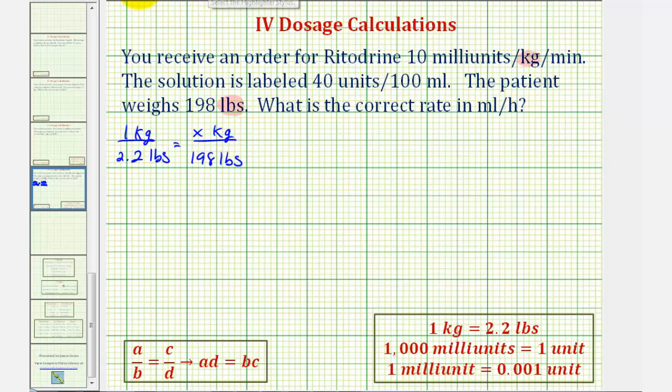Now before we cross multiply and solve for x, it's important to recognize that we have the same units on the top and the same units on the bottom. If we did not have this, we'd have to perform a conversion first.